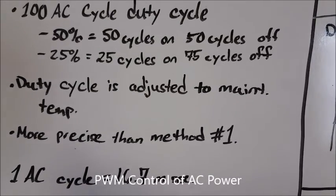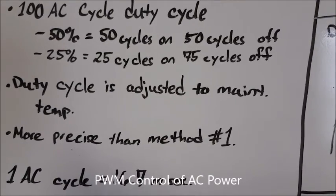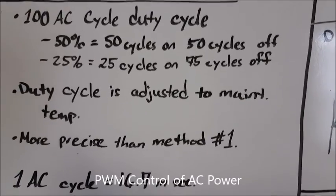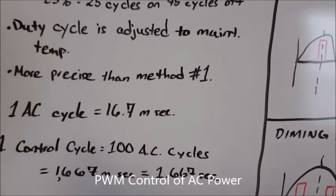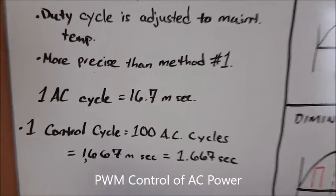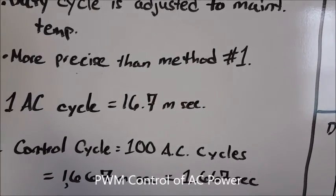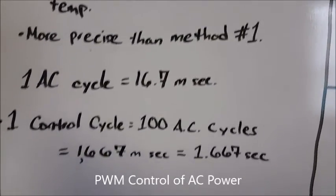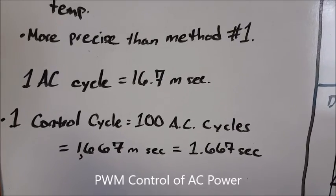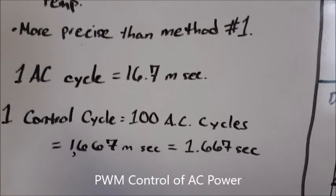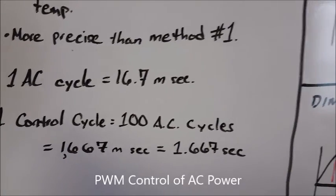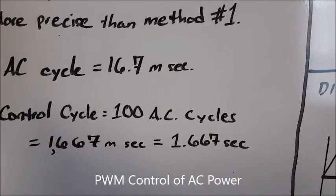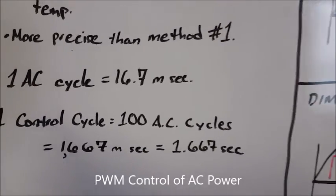The duty cycle can be adjusted to maintain constant temperature, so it's more precise than method number one. However, this does not work for our dimming project because one AC cycle equals 16.7 milliseconds, so one control cycle equals 100 AC cycles or 1.667 seconds, which will definitely cause visible strobing in the bulb.